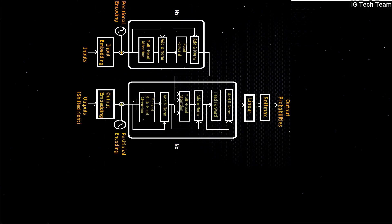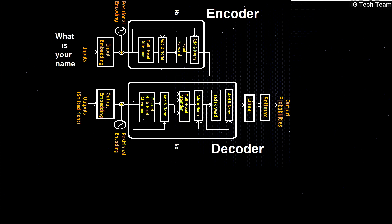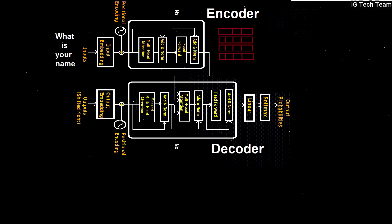Suppose we are doing language translation from English to Hindi. The encoder takes all words simultaneously and produces meaningful embeddings of all words simultaneously — if two words are similar, the numbers in their vectors will be close to each other. In the decoder, the output from the encoder and the translated Hindi language come in, and it tries to generate the next word from previous words, one at a time, until the end of the sentence is reached.